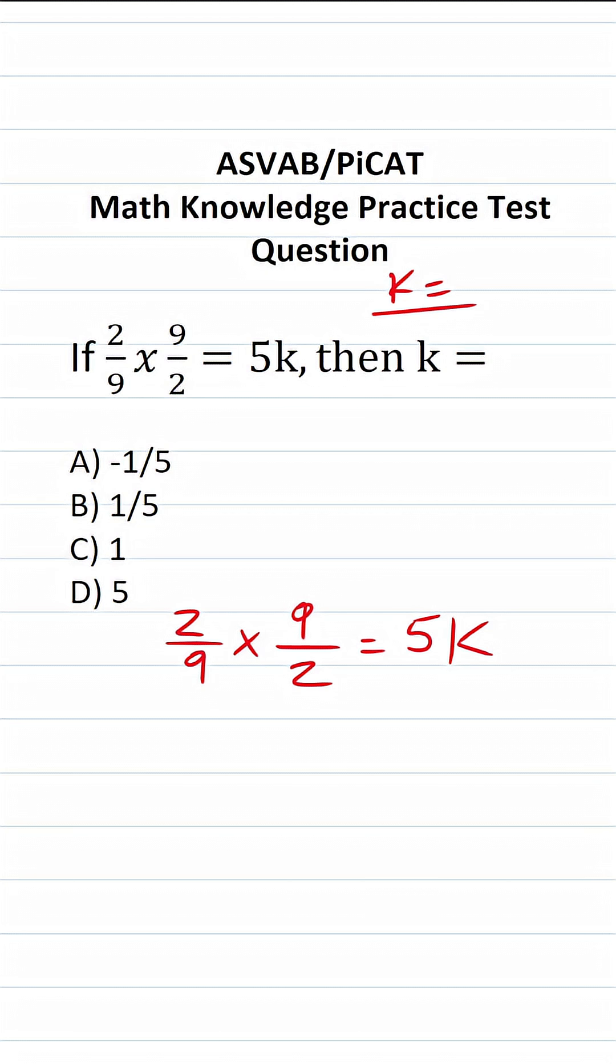But as you can see on the left-hand side of this equation, we're multiplying two fractions. When you multiply two fractions, you just multiply straight across. So this becomes 2 times 9 over 9 times 2 equals 5k.